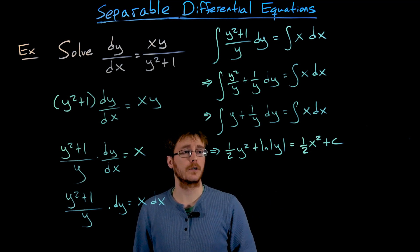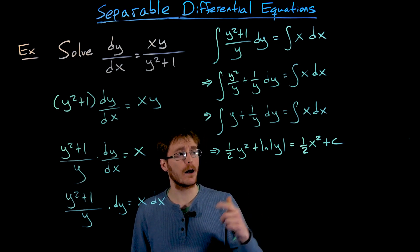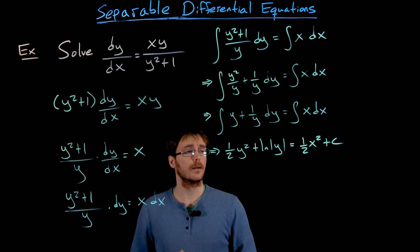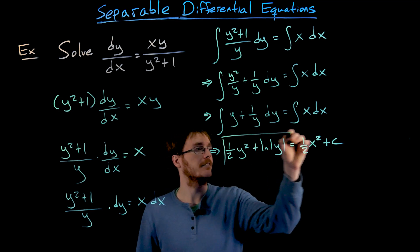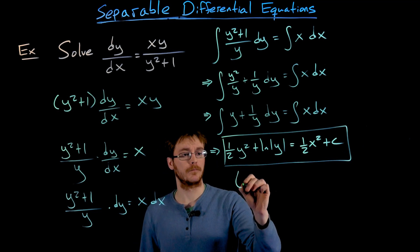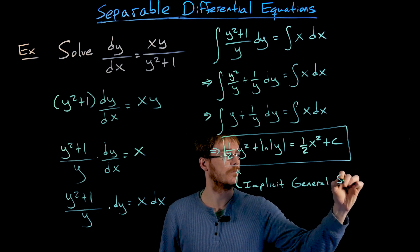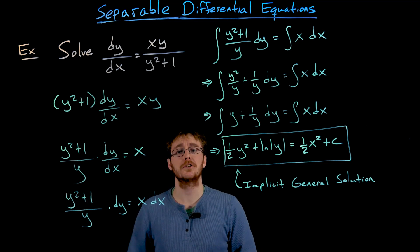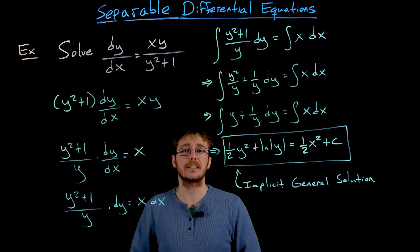After integrating both sides of our differential equation, we end up with an equation that relates x and y together implicitly. In the previous example we could do algebra to solve for y explicitly in terms of x, but for this problem y is trapped inside the natural log, so we cannot solve for y explicitly. We have to leave our general solution as an implicit solution. We will always try to find an explicit solution if possible, but sometimes the implicit form is the best we can do and it can be just as useful in applications.